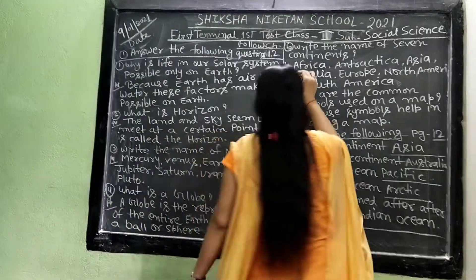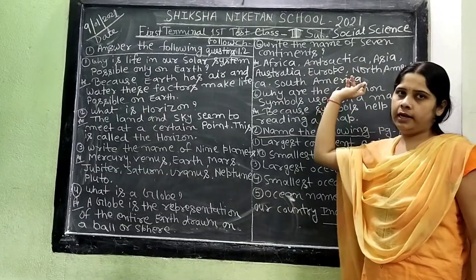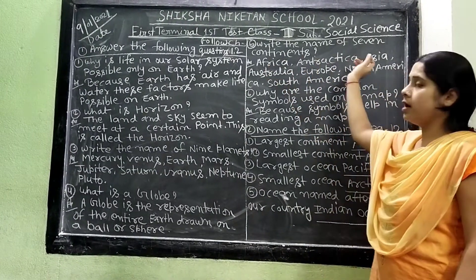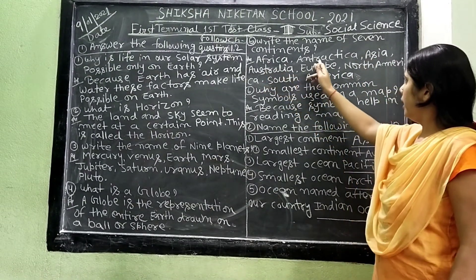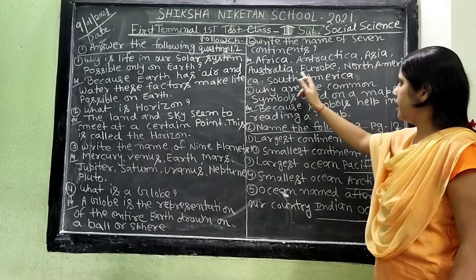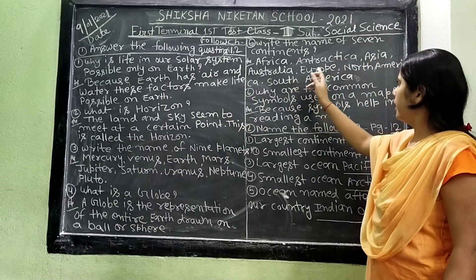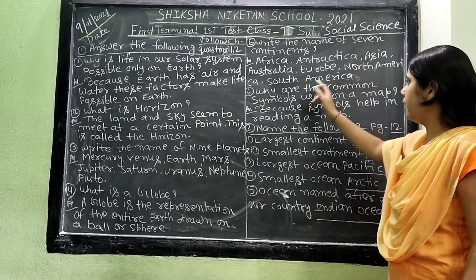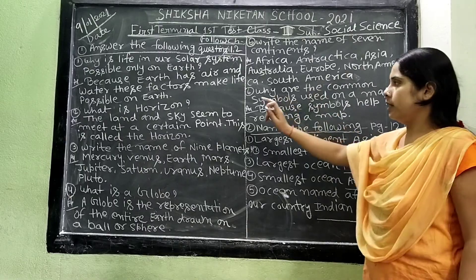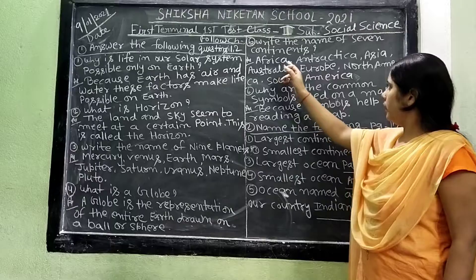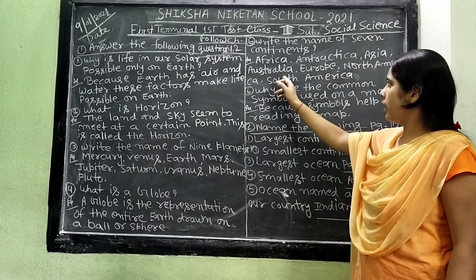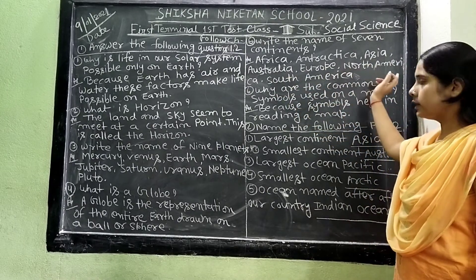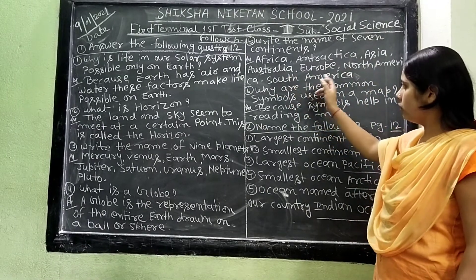Question number 5: Write the names of the 7 continents. Answer: Africa, Antarctica, Asia, Australia, Europe, North America, and South America.